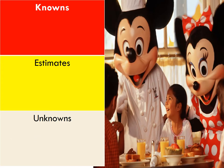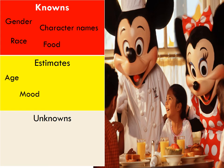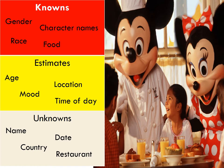Here's another picture you can take some knowns. Gender of the girl smiling, ethnicity, the character names Mickey and Minnie, the food they're eating is breakfast. Age again is an estimate, mood - they seem happy but they could be scared. Or even location, there's different places around the world. There's Disney. Time of day, you could say it's breakfast time but you are not certain. Unknowns: name, country, date, if the restaurant, or name of the restaurant.